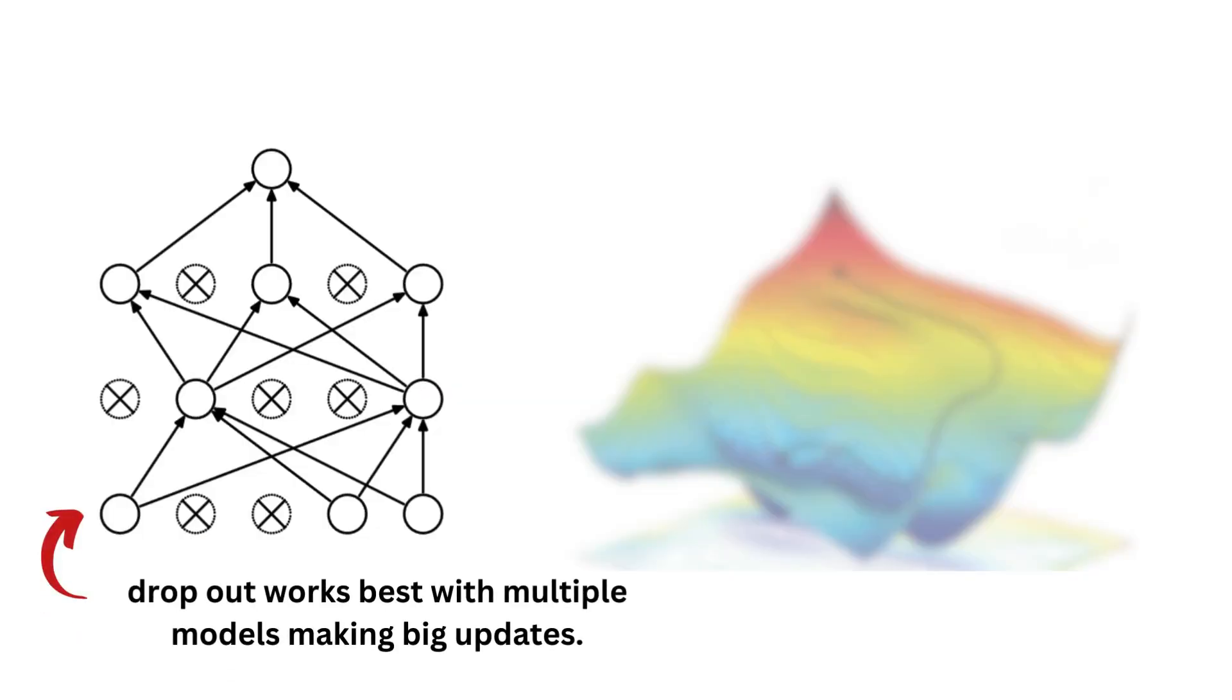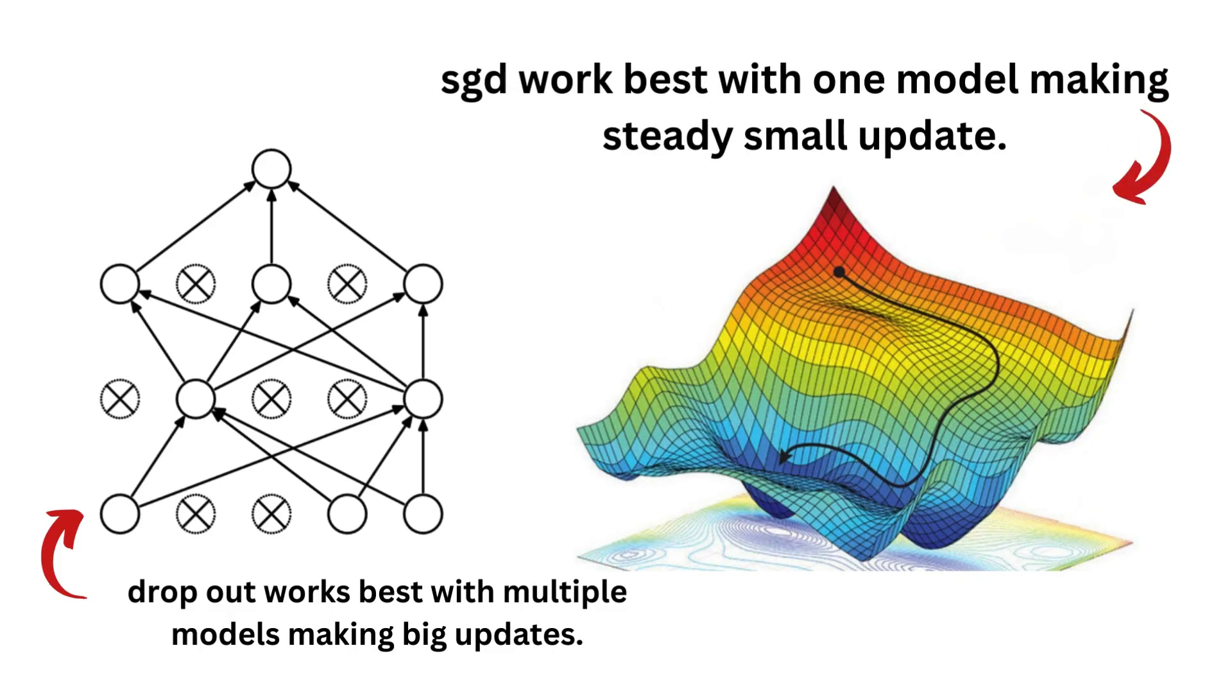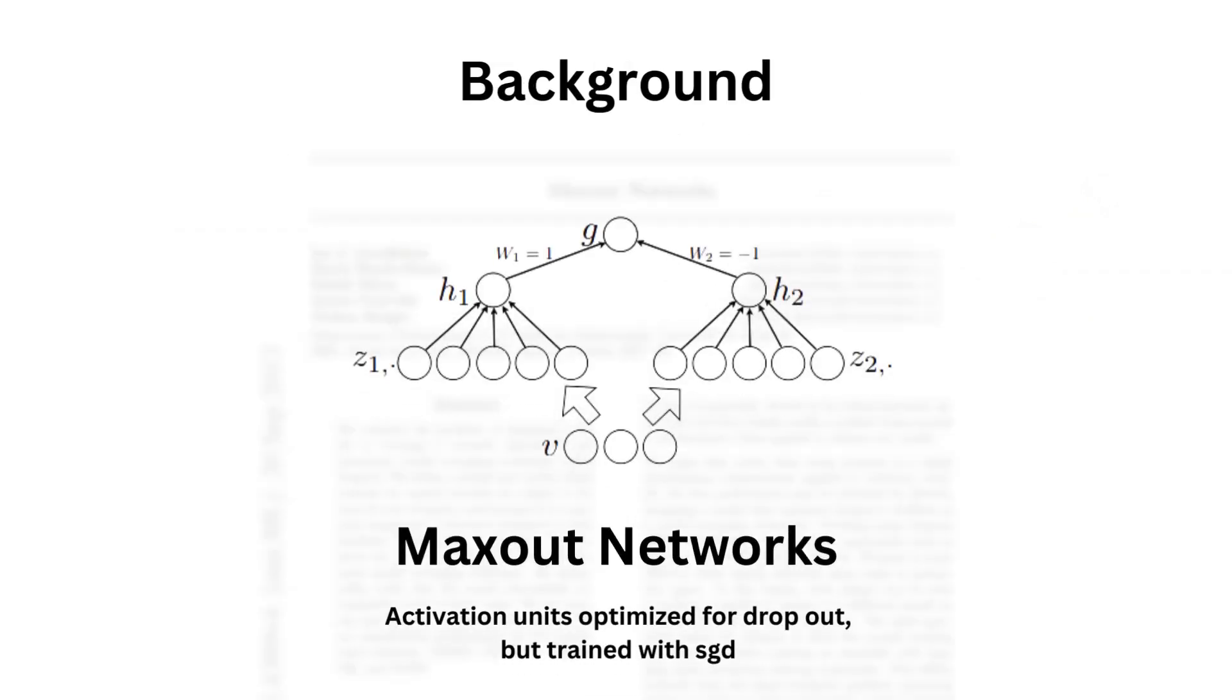Bagging methods work best when the different networks are not too close in similarity, meaning for dropout to be theoretically optimal, big updates should be made through each iteration. Yet stochastic gradient descent works best once one model that is updated steadily over a smaller step. This is where the author came out with the maxout network, a network containing activation units that are optimized to be used with dropout, but trained with stochastic gradient descent.